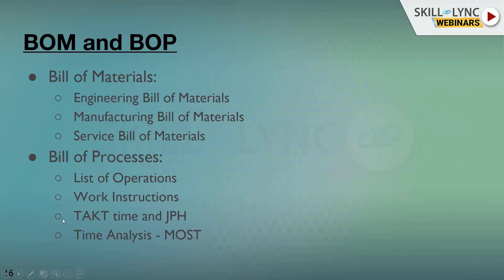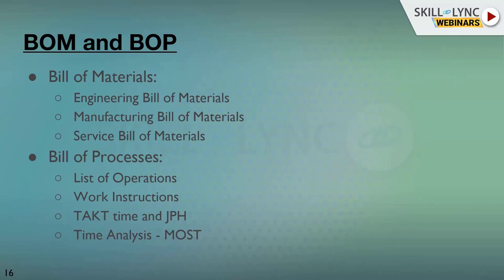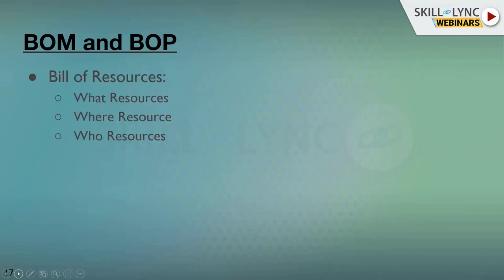Takt time is the total time available divided by the total demand for that particular day at the plant. These factors are kept in mind while fine-tuning the list of operations. Time analysis is done using something called MOST code — Maynard Operation Sequence Timing. You do time analysis to know exactly how much time it takes to fit the wheel on the axle, or the headlamp — for each activity — and what the difference is if done by a robot, a human, or different types of workers. The whole cycle time is arrived at from this.